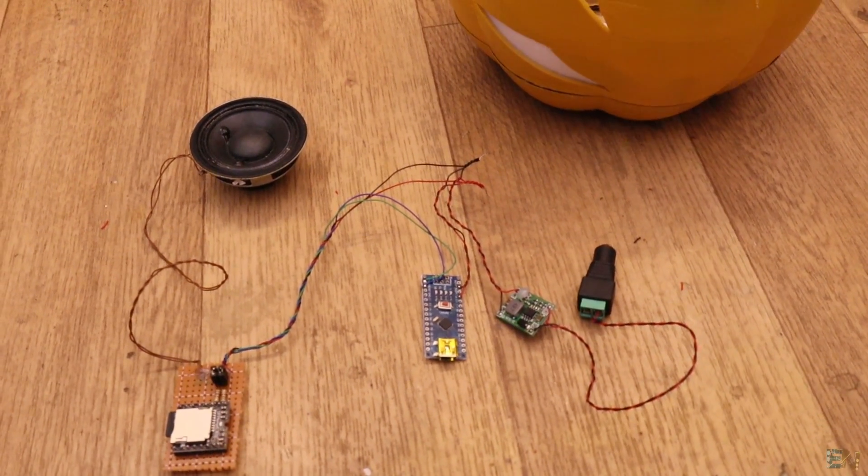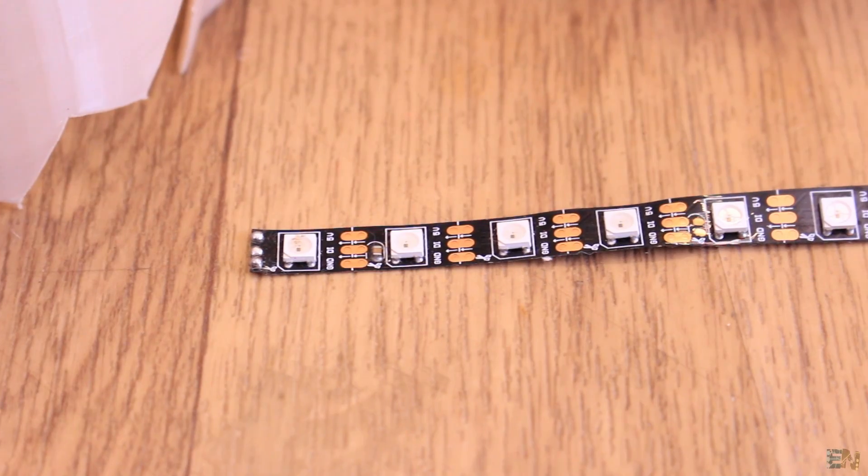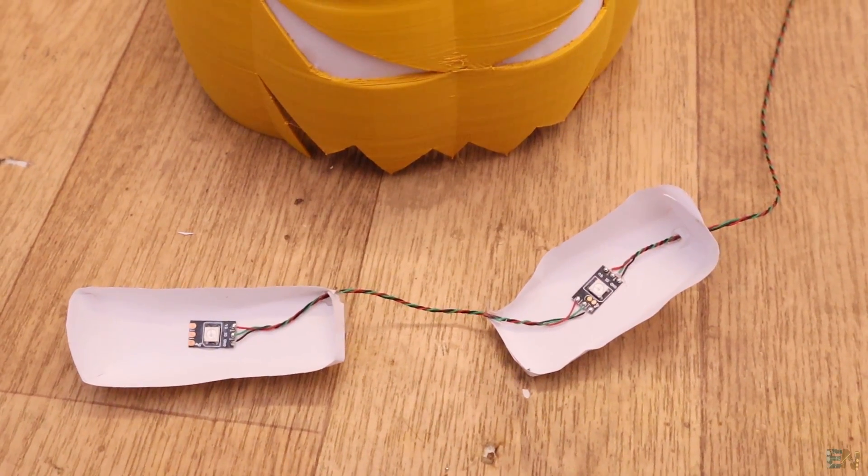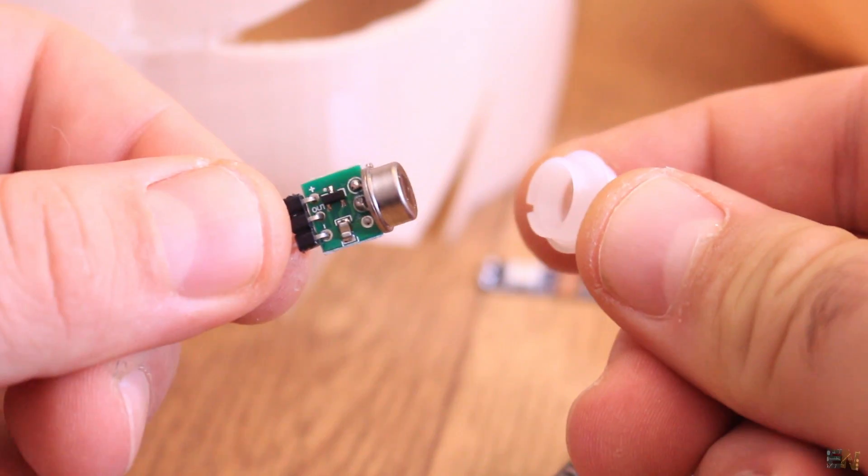And for that inside we have an Arduino connected to a few other parts. For light effects I'm using an addressable control LED strip. For sounds we have an MP3 module and to detect the movement a PIR sensor.